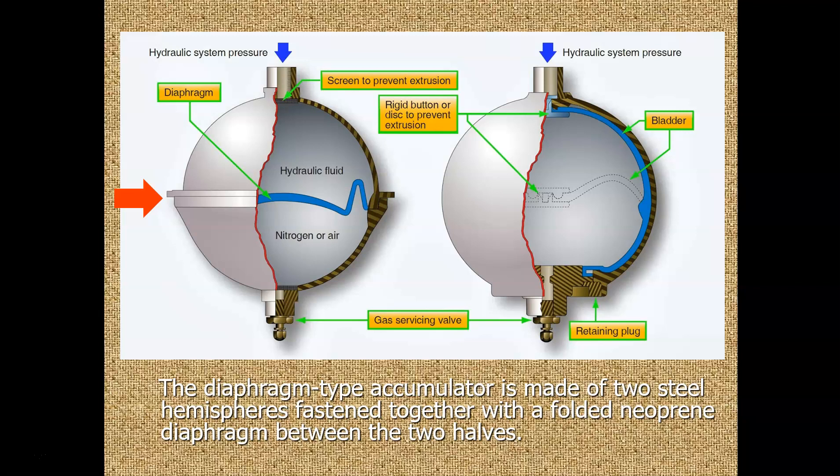Here's a diaphragm accumulator. This is back to the first one that we were looking at. In this picture on the left, we have nitrogen in the bottom, and this valve here on the very bottom is how we put nitrogen in. So we hook up a hose when the airplane's on the ground. We pump this full of nitrogen, and we put something like maybe 1,200 psi of nitrogen, sometimes more, in there, and the nitrogen will be stored under pressure.